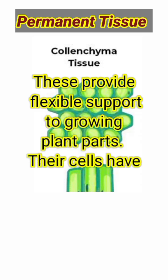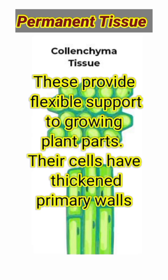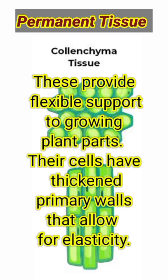Number 2: Collenchyma. These provide flexible support to growing plant parts. Their cells have thickened primary walls that allow for elasticity.